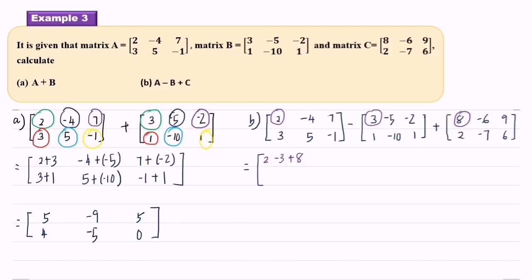Next: negative 4 minus negative 5 plus negative 6. Next: 7 minus negative 2 plus 9.